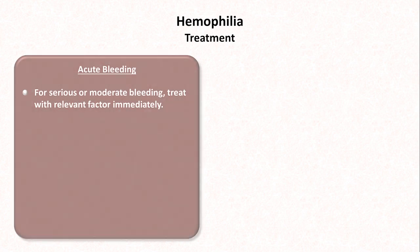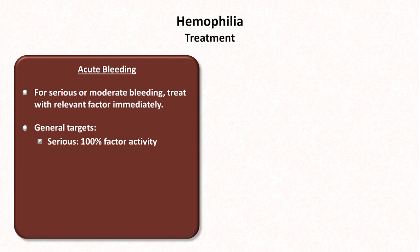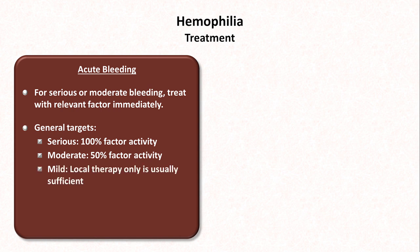For serious or moderate acute bleeding, treat with the relevant factor immediately. The general target for activity level depends upon the severity of bleeding. With serious, life-threatening bleeding, 100% activity is the goal. For moderate bleeding, 50% of activity. For mild bleeding, local therapy such as compression is usually sufficient. Anti-fibrinolytic therapy can be used as an adjunct, but does not substitute for the factor.